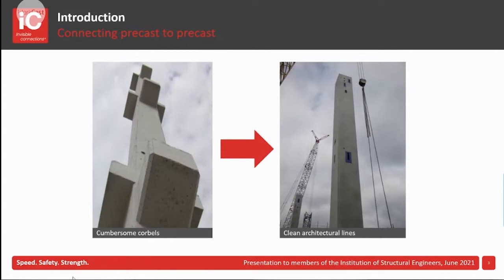Or if we're designing with a precast concrete frame, we can go from a column with big bulky corbels, which are difficult to design, difficult to form for the precaster, and difficult to transport to site, to the column on the right-hand side incorporating telescopic connectors, where we've got a nice, neat, simple column.